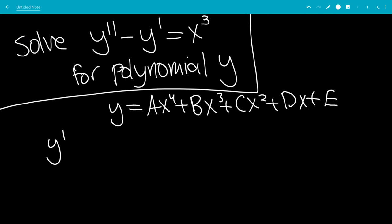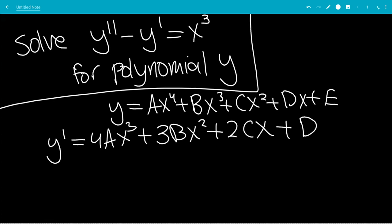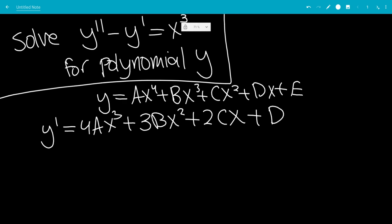So y prime, differentiating this, will be 4ax cubed plus 3bx squared plus 2cx plus d. So we lost e. So y double prime will be the derivative of y prime, which is 12ax squared plus 6bx plus 2c, and we lose d.